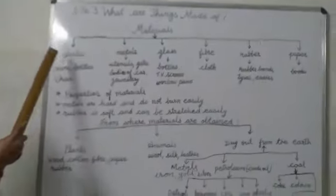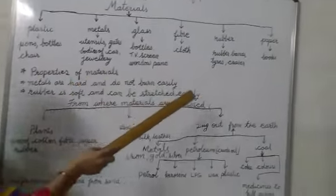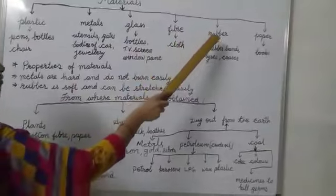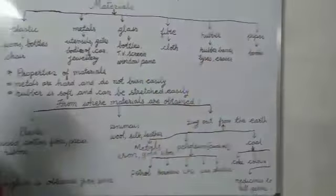Some of the materials that we use to make everyday things are plastic, metals, glass, fiber, rubber, and paper.